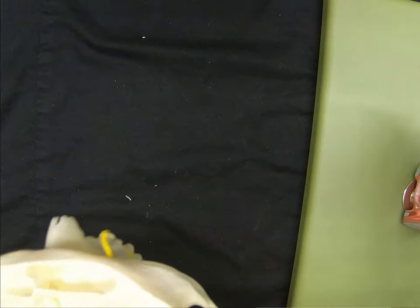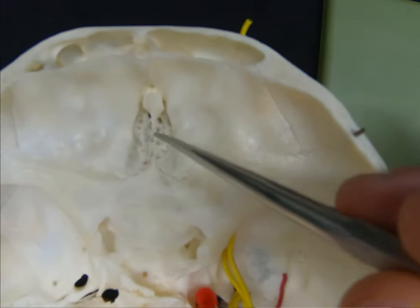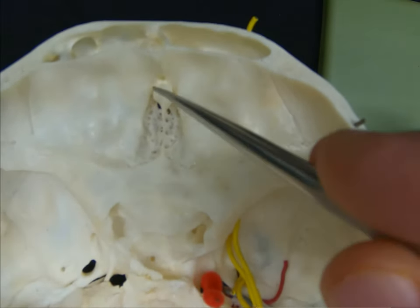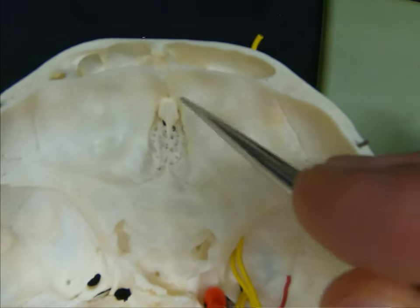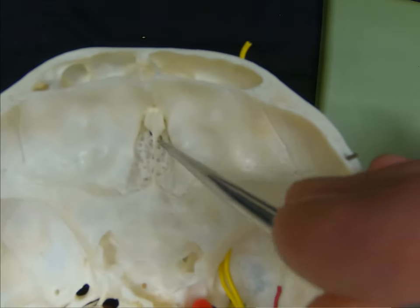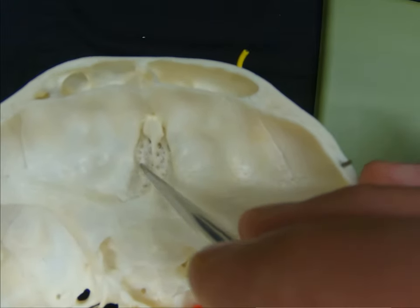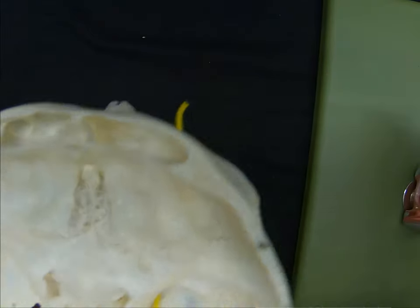Looking at an additional dry skull model, we'll once again see the ethmoid bone sitting in the frontal bone area, and we can see the cribriform plate on either side where cranial nerve 1 would rest.